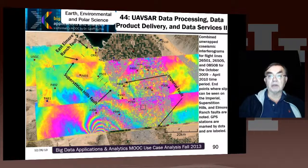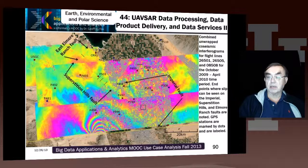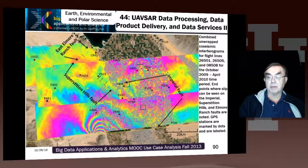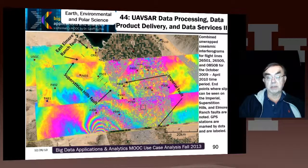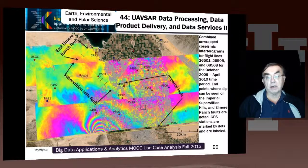Here's an example of interferograms for a couple of flight lines — actually a few flight lines from the 2010 period — where various interesting effects can be seen. This is in Southern California, and the data is supplemented by GPS, shown as dots. The GPS is linked to the UAVSAR for a study of the earthquake and seismic activity.